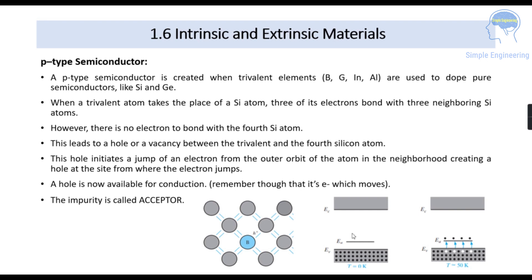In the figure you can see that at zero Kelvin there are electrons in the valence band, an acceptor level, and the conduction band. When the temperature starts increasing, the electrons in the valence band move to the impurity acceptor atoms, and vacant spaces — that is, holes — are created.